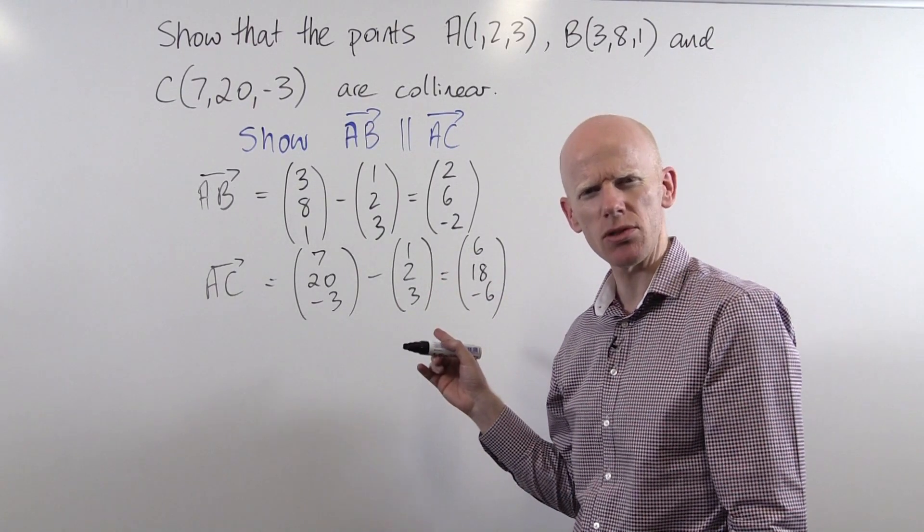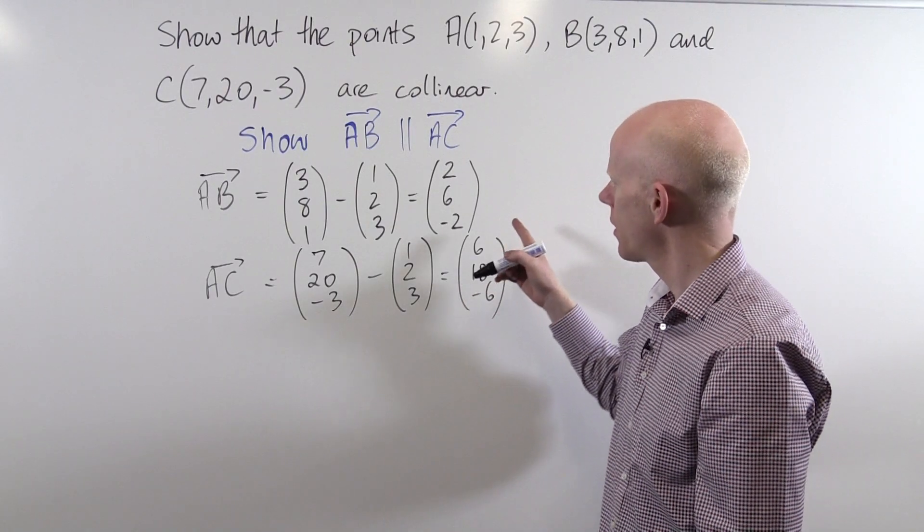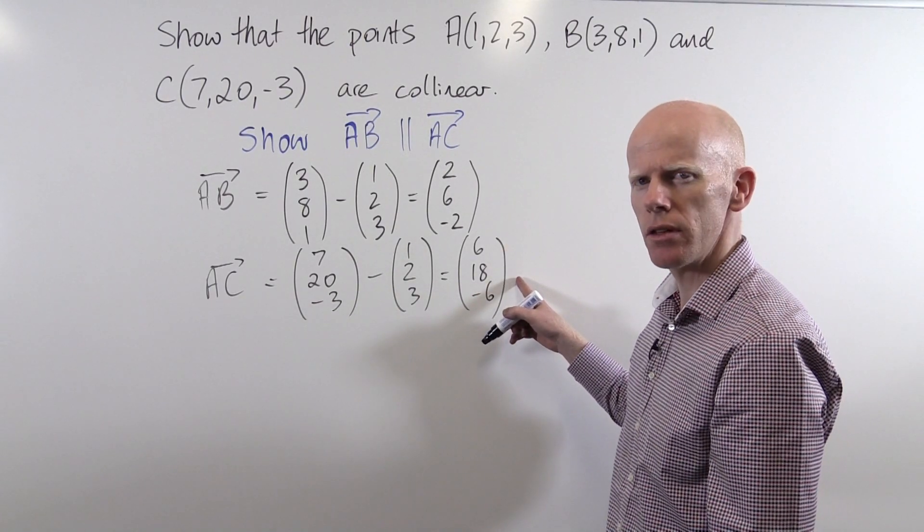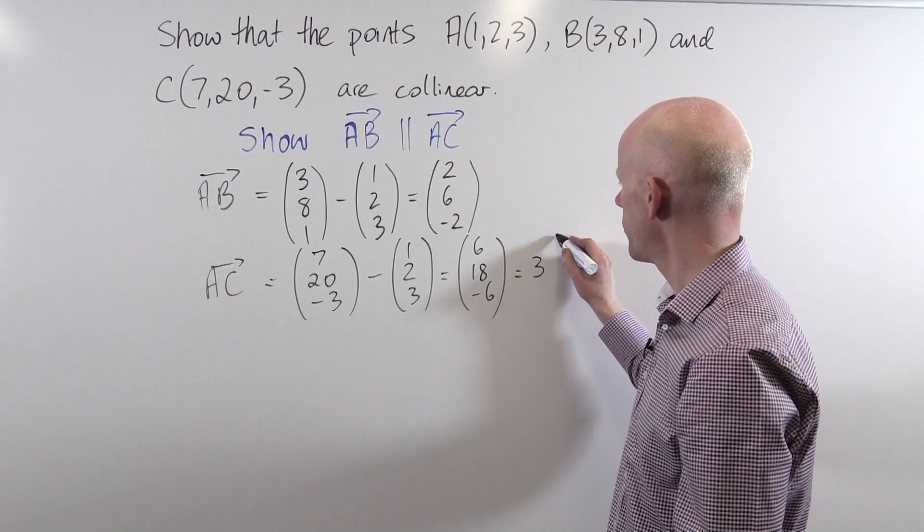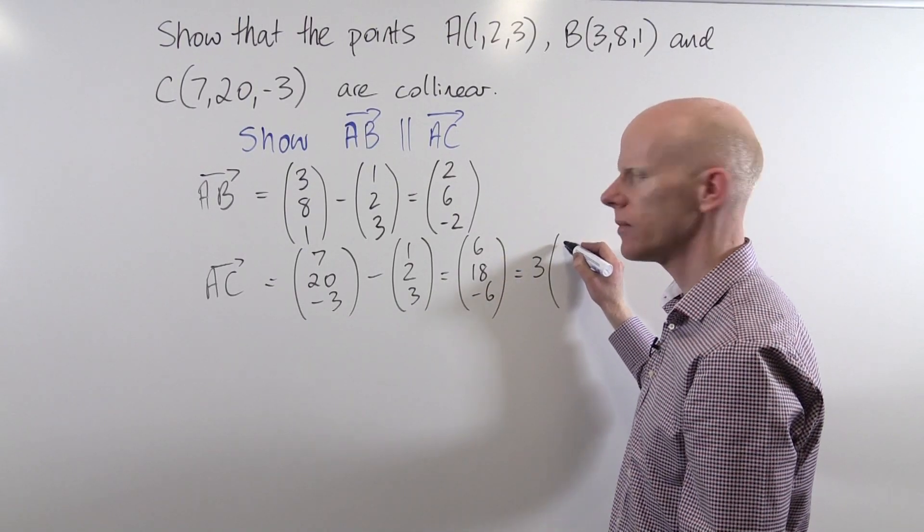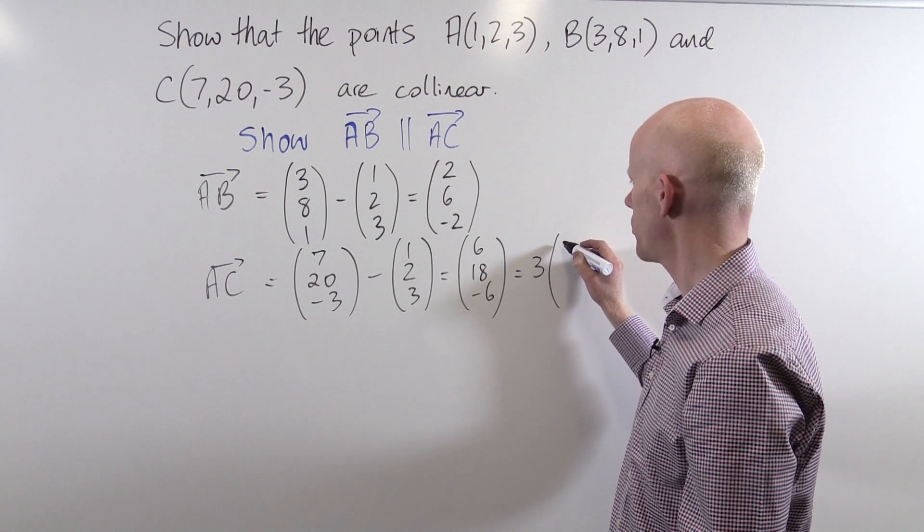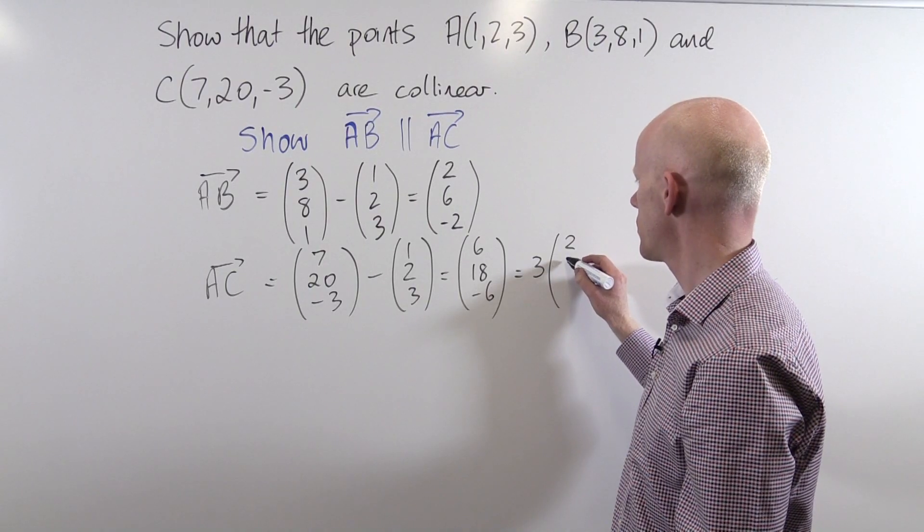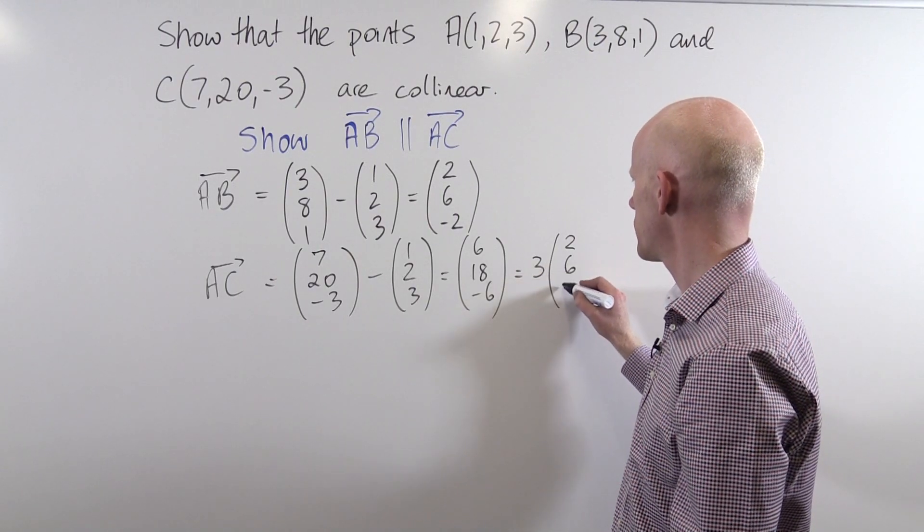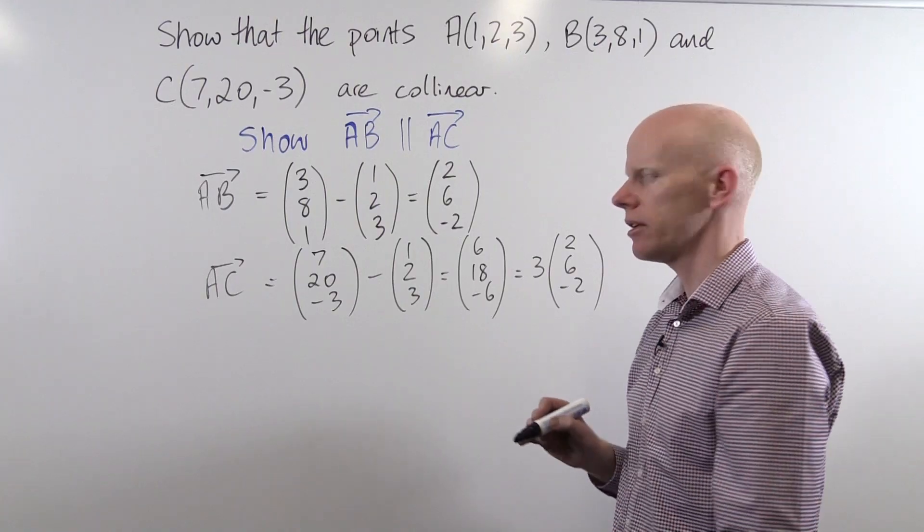What's the relationship between these two vectors? Upon observation, the vector AC is a multiple of the vector AB. Taking out 3 as a common factor, I can say that vector AC is 3 times the vector 2, 6, negative 2.